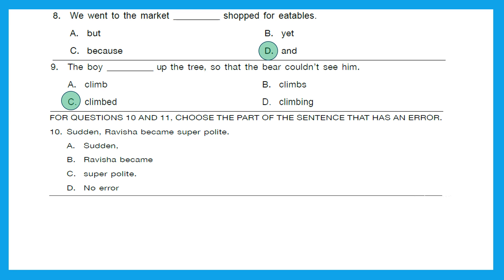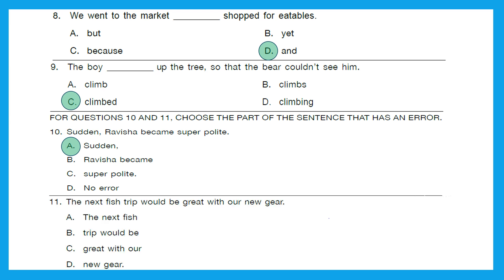For questions 10 and 11, choose the part of the sentence that has an error. Question 10: 'Sudden, Ravisha became super polite.' The correct sentence should be 'Suddenly, Ravisha became super polite.' Rather than 'sudden,' it should be 'suddenly.' Option A is the right answer. Question 11: 'The next fish trip would be great with our new gear.' It should be 'the next fishing trip.' Option A is the right answer.